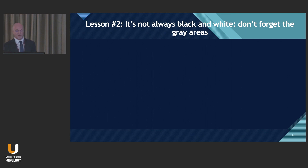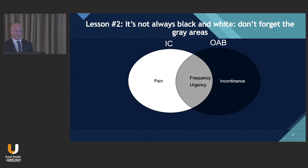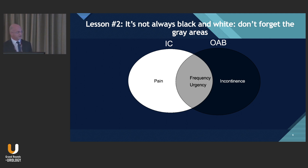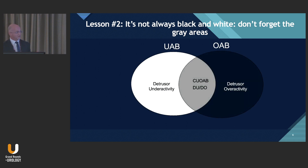Lesson two: it's not always black and white — don't forget the gray areas. Benign urology has many conditions traditionally thought of as mutually exclusive. OAB and interstitial cystitis are two of those. While one may consider them on opposite ends of the same spectrum, I do have patients with interstitial cystitis who also have urgent incontinence, and patients with OAB or neurogenic bladder who develop IC or bladder pain syndrome. It may sound like an oxymoron, but a patient can have both overactive and underactive bladder — what we've designated DHIC, or detrusor hyperreflexia with impaired contractility.